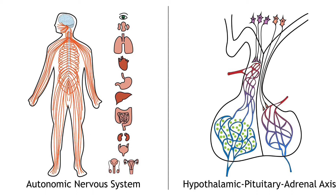The body has two main systems for responding to stress: the autonomic nervous system and the hypothalamic-pituitary-adrenal, or HPA, axis. The autonomic nervous system response occurs very quickly because it is synaptic in nature and is responsible for the fight-or-flight response, which stimulates heart rate and breathing and inhibits digestion.